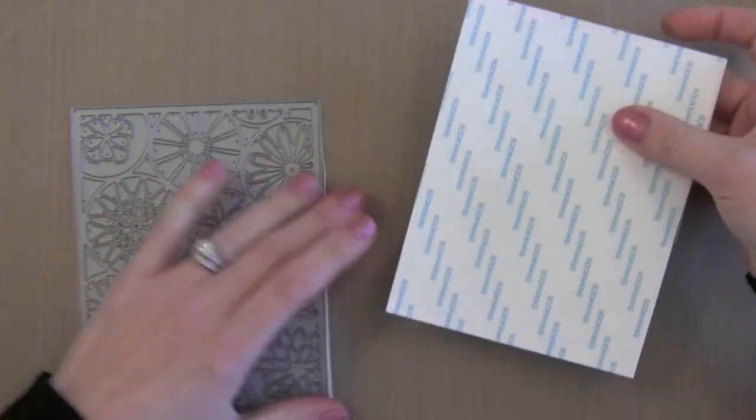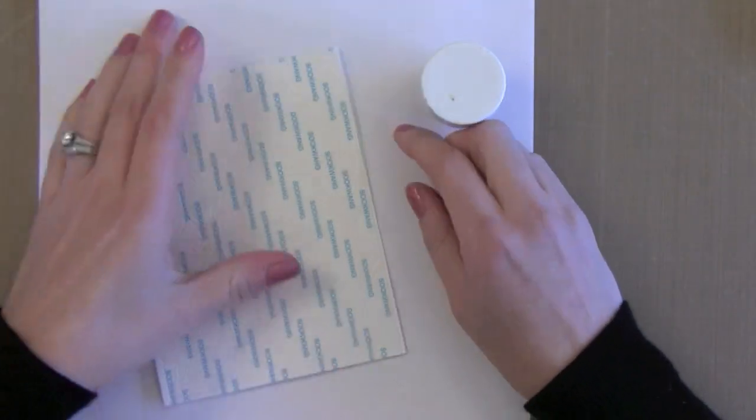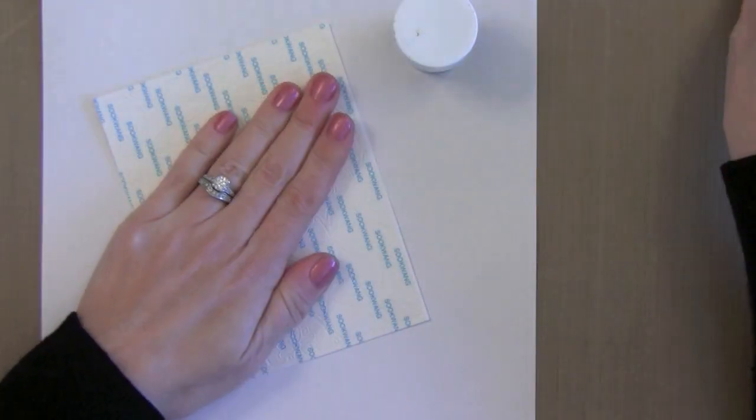Now if you don't have background dies you can just use various dies to put a pattern along a background piece if you wanted to.